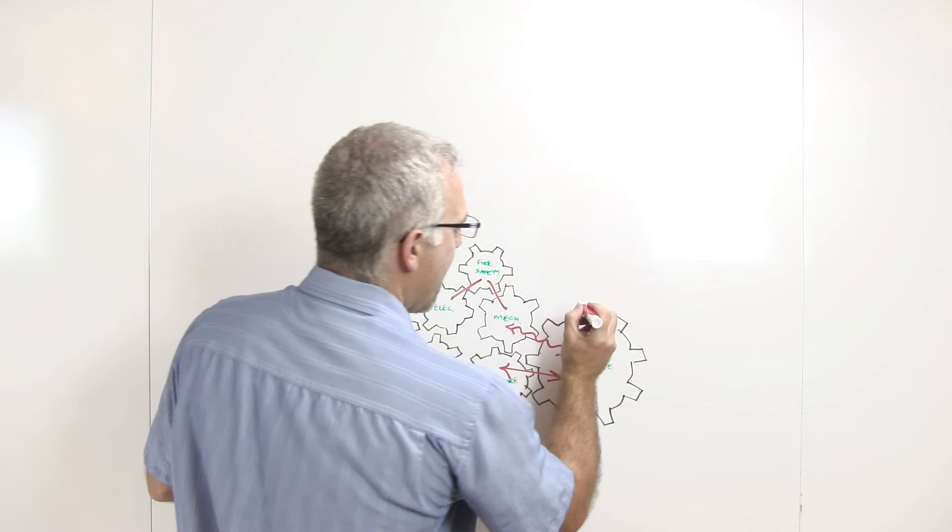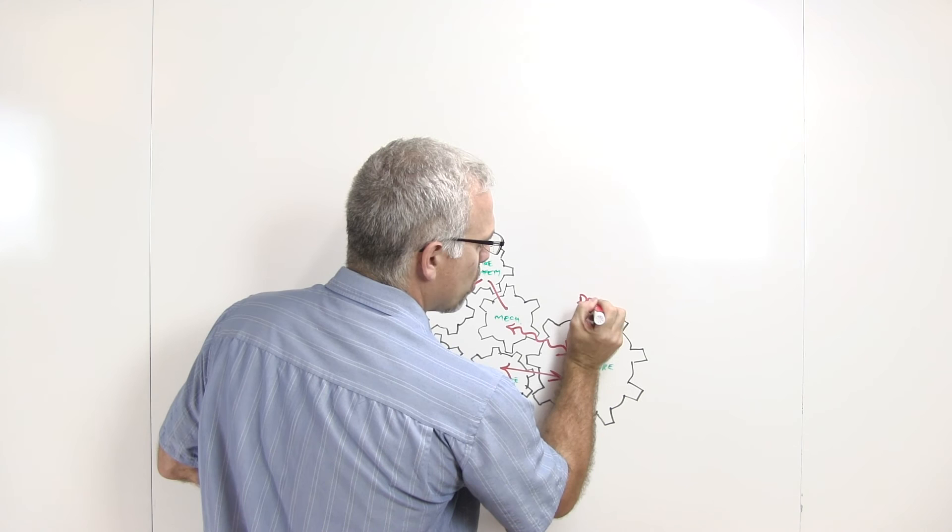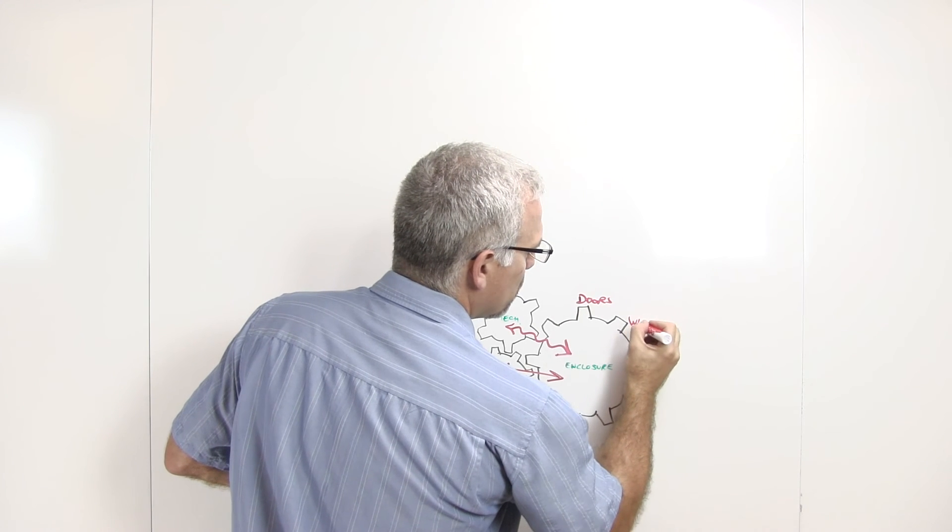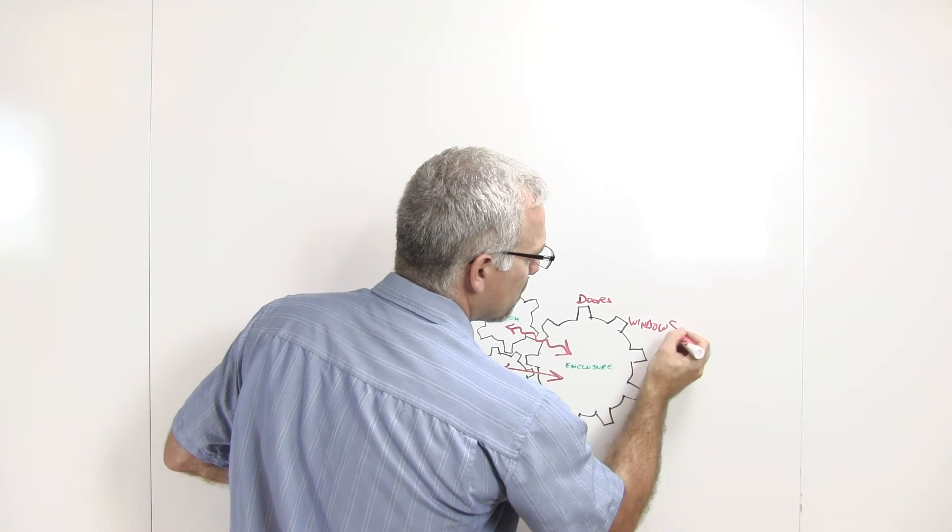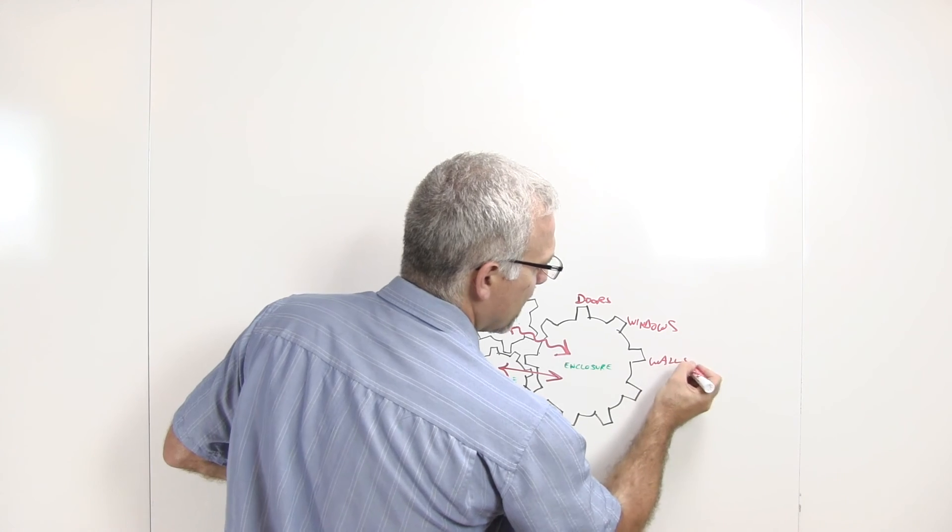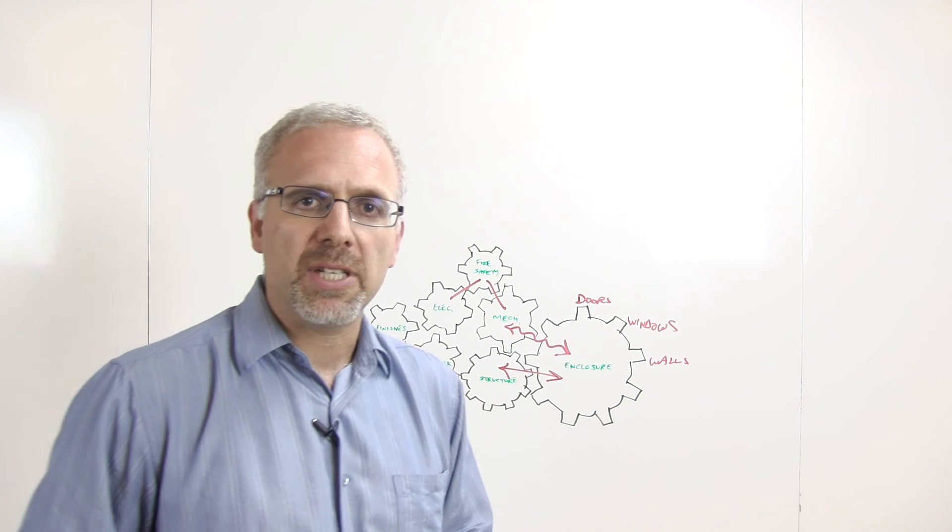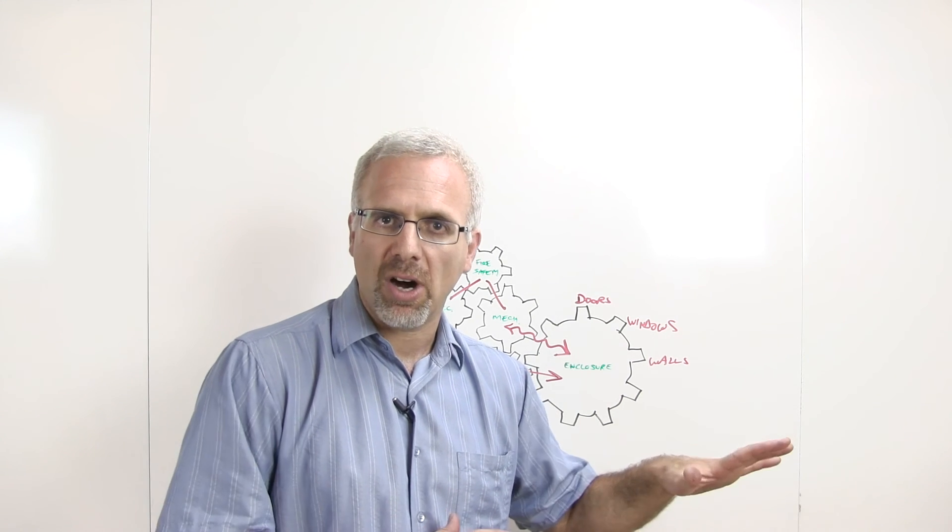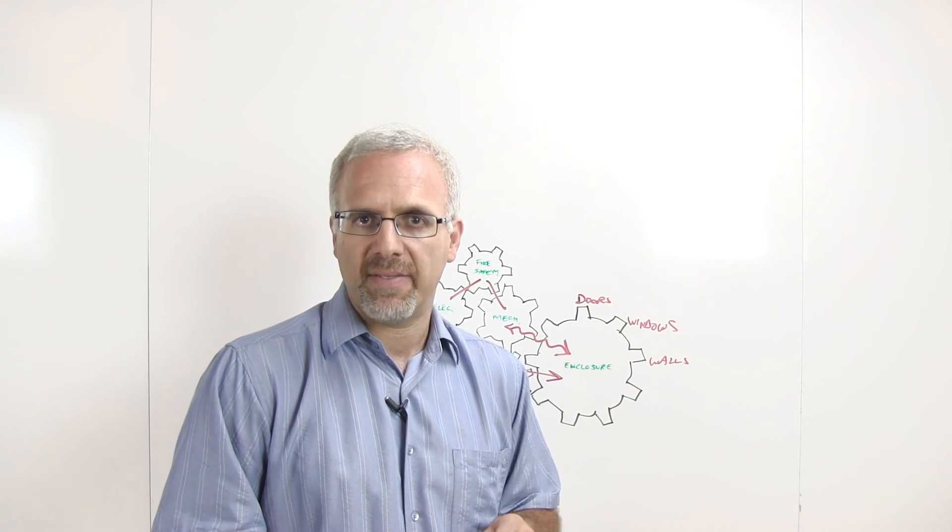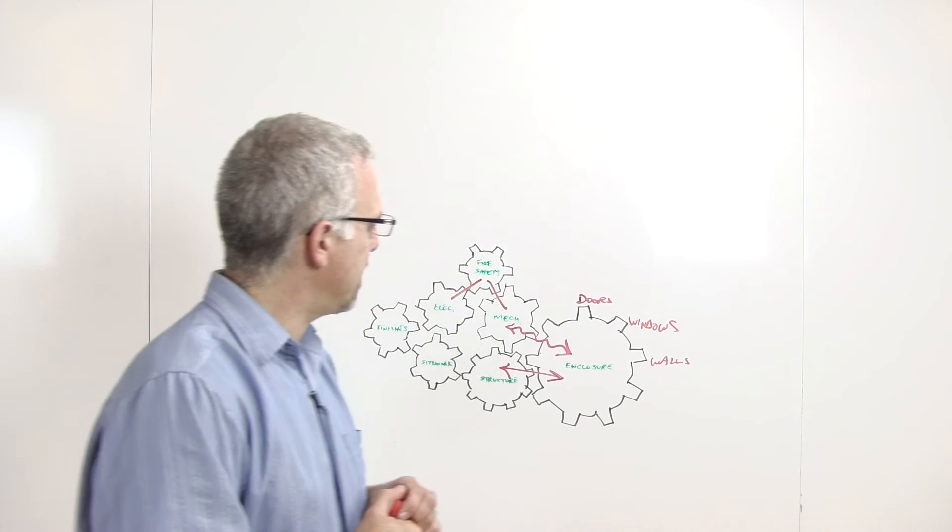So, in brief, then, we have in the enclosure system, we've got our doors, our windows, our walls and other elements. Site work is anything around the perimeter of the property, typically at grade, landscaping, hard and soft landscaping, paving surfaces, fencing and other components.